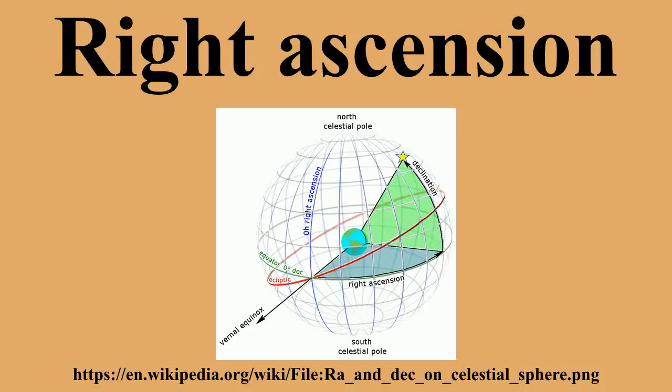When combined with declination, these astronomical coordinates specify the direction of a point on the celestial sphere in the equatorial coordinate system.